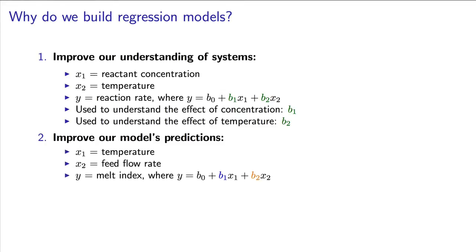An example of the second use of regression models is the case when making predictions. Let's imagine we're trying to predict melt index as our output variable. Melt index is affected by both temperature and the flow rate at which the material is moving. We can build a model to obtain these coefficients, B0, B1, and B2, to make predictions of y.